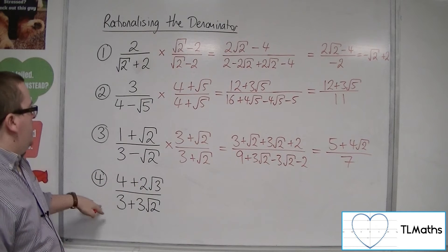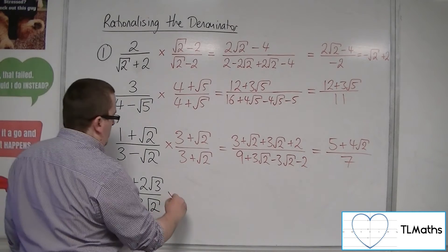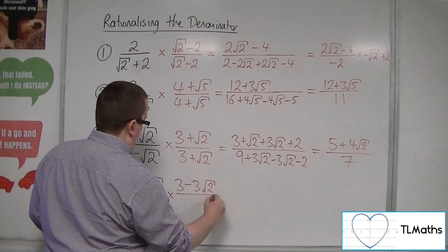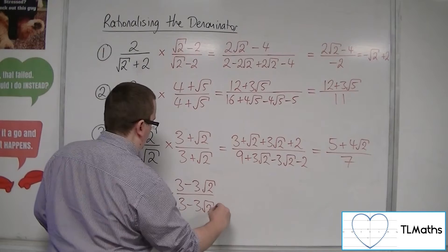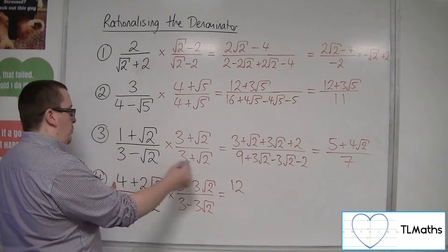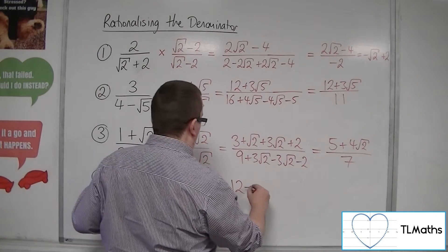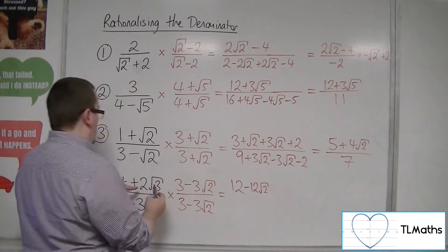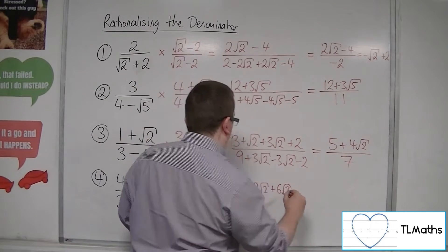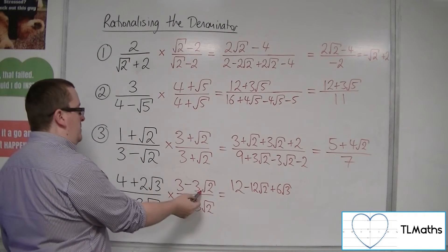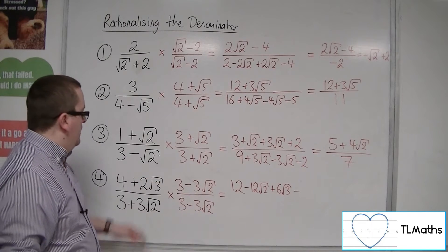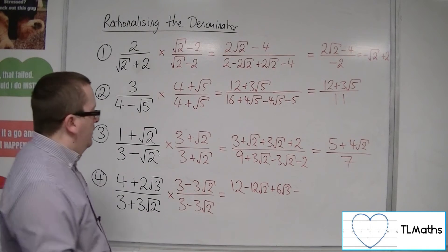For number 4, we've got 4 plus 2 root 3 over 3 plus 3 root 2. So I'm going to multiply top and bottom by 3 minus 3 root 2 over 3 minus 3 root 2. In the numerator: 4 times 3 is 12, then 4 times minus 3 root 2 is minus 12 root 2. Then 2 root 3 times minus 3 root 2 — we're definitely going to have a minus — 2 times 3 is 6, and root 3 times root 2 is root 6, so minus 6 root 6.